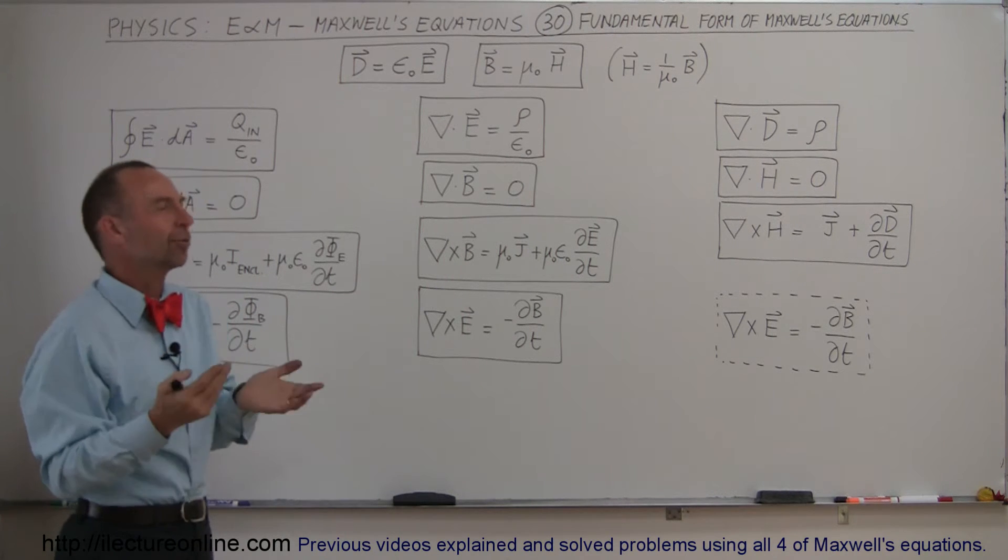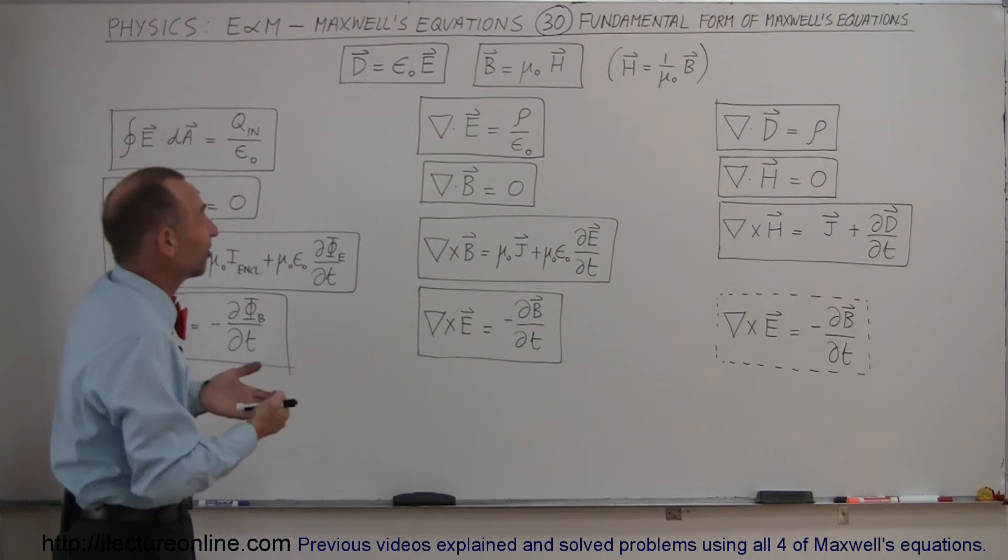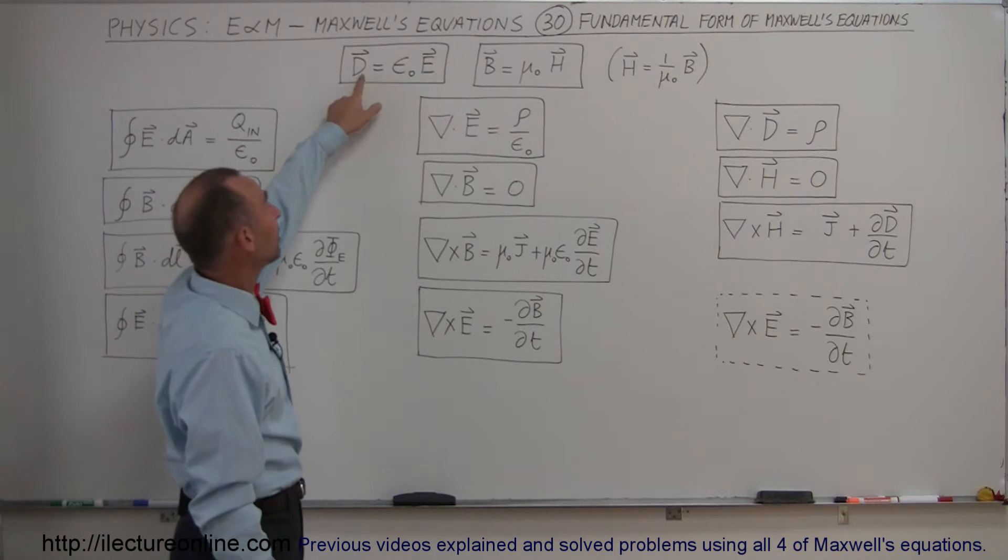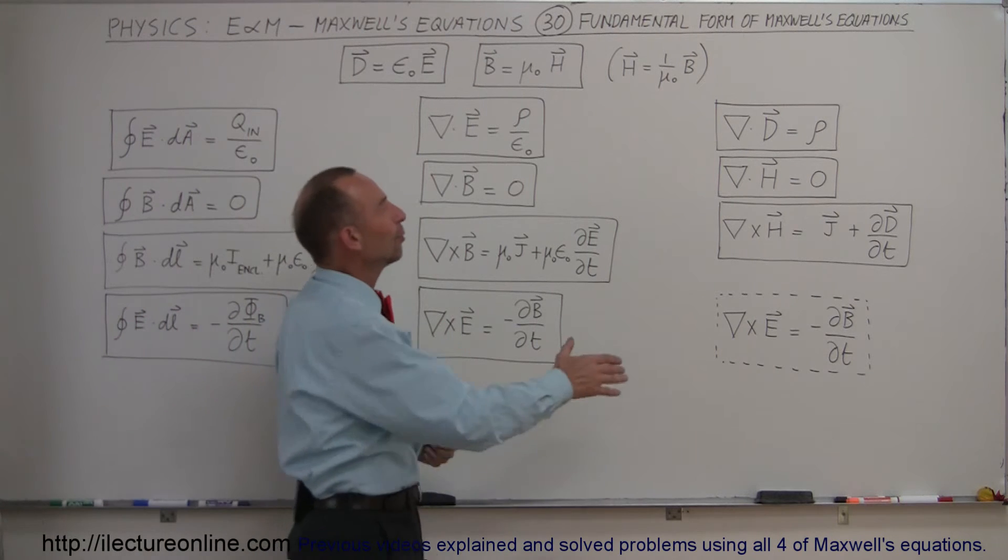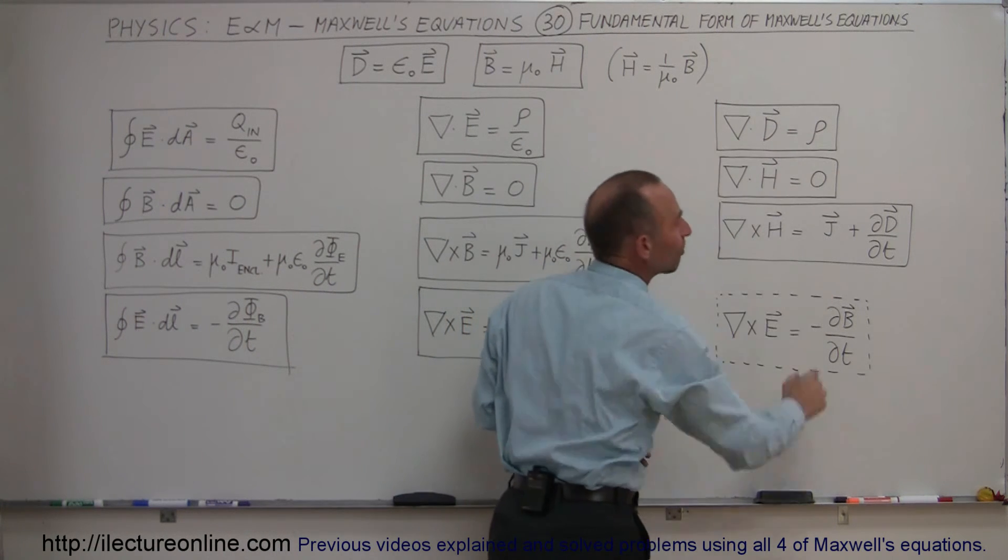But yet, for me as a student, it always confused me. Why did you come up with the D field? What is the D field? Well, the D field is just a different mathematical representation of the electric field. It simply means electric field times epsilon sub naught. And by doing that, you can write Maxwell's first equation, Gauss's law, in differential form in a very simplistic form.